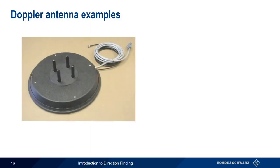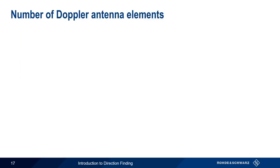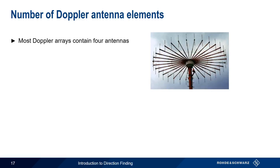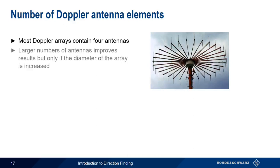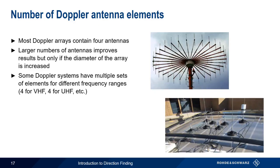Most Doppler DF antennas have four elements equally spaced with vertical polarization. Keep in mind, however, that not all DF antennas with four equally spaced elements are Doppler antennas. Doppler antennas can be vehicle mounted, fixed mounted, or configured in a man-portable package. It's possible to have Doppler DF antenna arrays with larger numbers of antenna elements — the idea being that our synthesized Doppler sine wave will be more accurate if we have more measurement points. It is true that larger numbers of antennas improves Doppler DF results, but this only applies if we also increase the diameter of the antenna array. Some Doppler systems have multiple sets of antennas to cover wider frequency ranges. For example, one array shown has a total of eight elements — really just two arrays of four elements each, with the longer antennas covering VHF and the shorter antennas covering UHF.